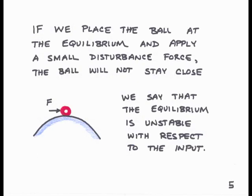Now we'll consider a second test of the ball at the top of the hill. We put it back at the equilibrium, and now we apply a small disturbance force. The force may be very small, but that force will move the ball away from the equilibrium, and the ball will not stay close to the equilibrium — it will keep moving away, no matter how small that force is. So we say that this equilibrium is unstable with respect to the input; it doesn't stay close, even for a very small force. So we've seen two different kinds of instability: an instability with respect to initial conditions, and an instability with respect to an input.